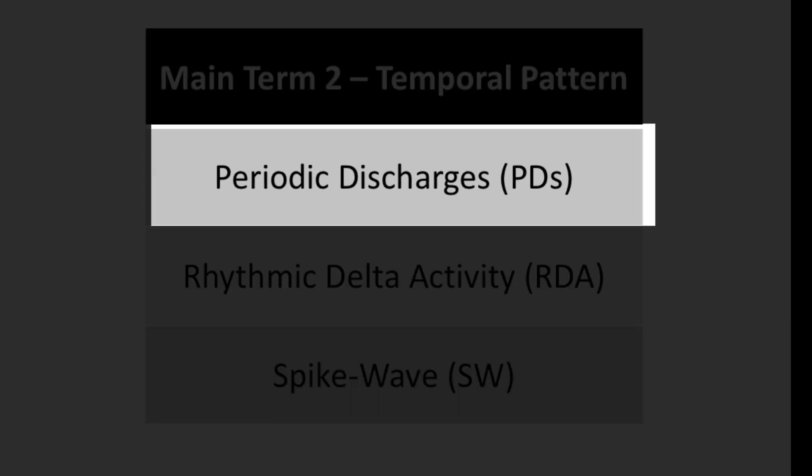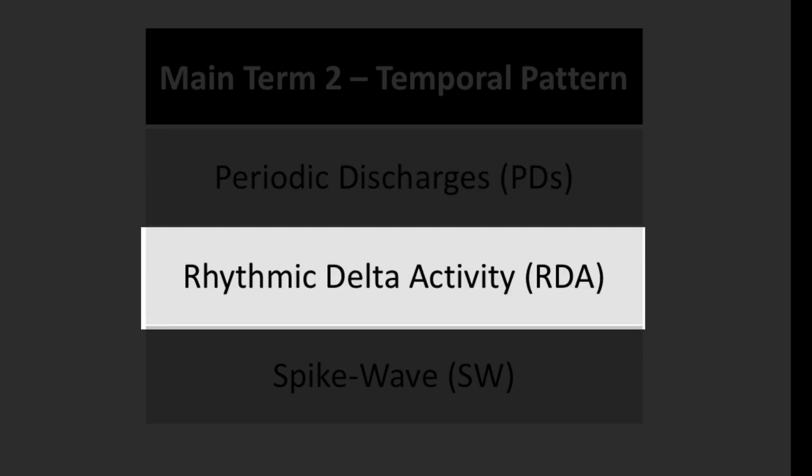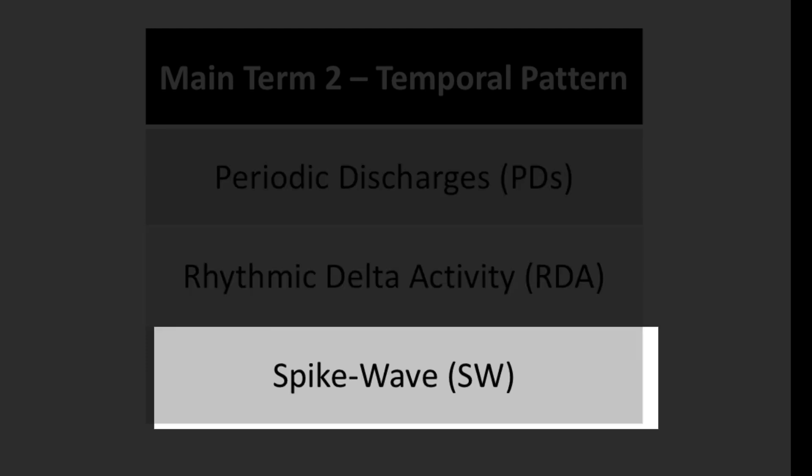The temporal patterns can be periodic discharges, rhythmic delta activity, or spike wave activity. Although EEGers can take any approach to describing these patterns — starting with the first or second term and then combining them — it is actually helpful to look at the second term first.